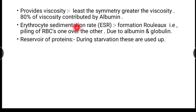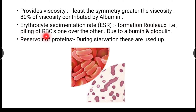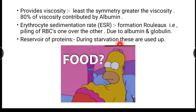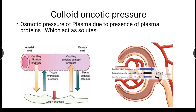Erythrocyte sedimentation rate, or ESR, involves the formation of Rouleaux — the piling of RBCs one over the other — which is due to albumin and globulin. Plasma proteins also act as a reservoir of proteins and are used up during starvation. Importantly, plasma proteins create colloid oncotic pressure, which is the osmotic pressure of plasma due to the presence of proteins acting as solutes.